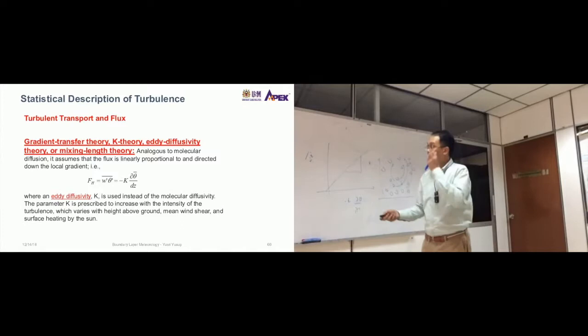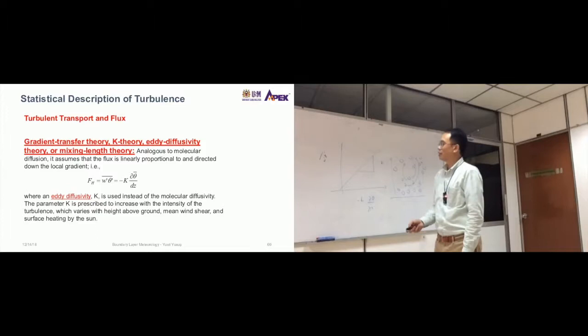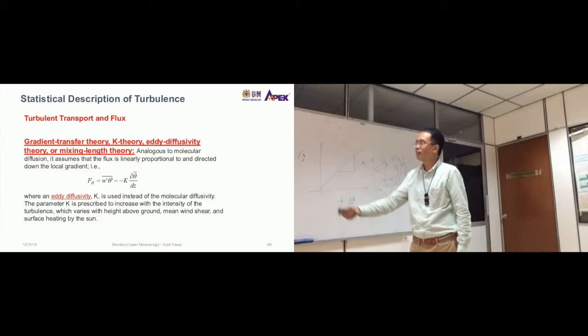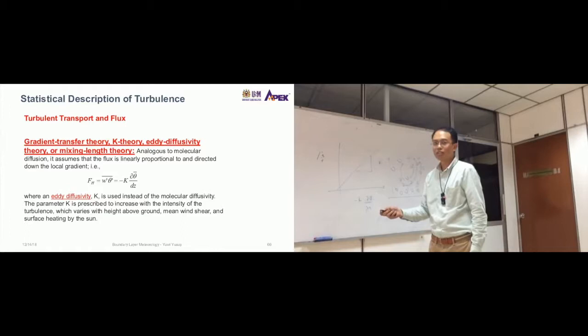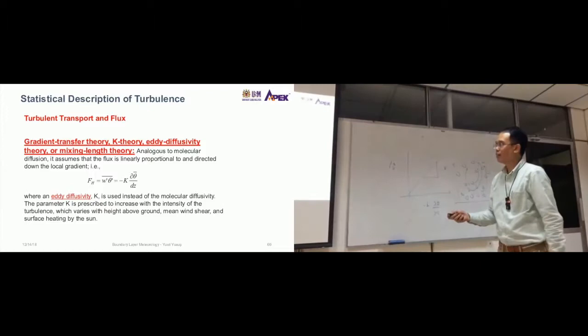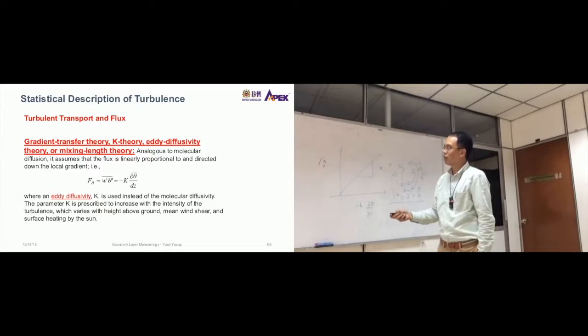So the parameter K is described to increase with the intensity of turbulence. That means how fast the eddy goes through the air is described by this K. It's described by K, and this K is influenced by turbulence. The higher the turbulence, the faster that the eddies can diffuse through the air. And this K varies with height above ground, mean wind shear, and surface heating by the sun.